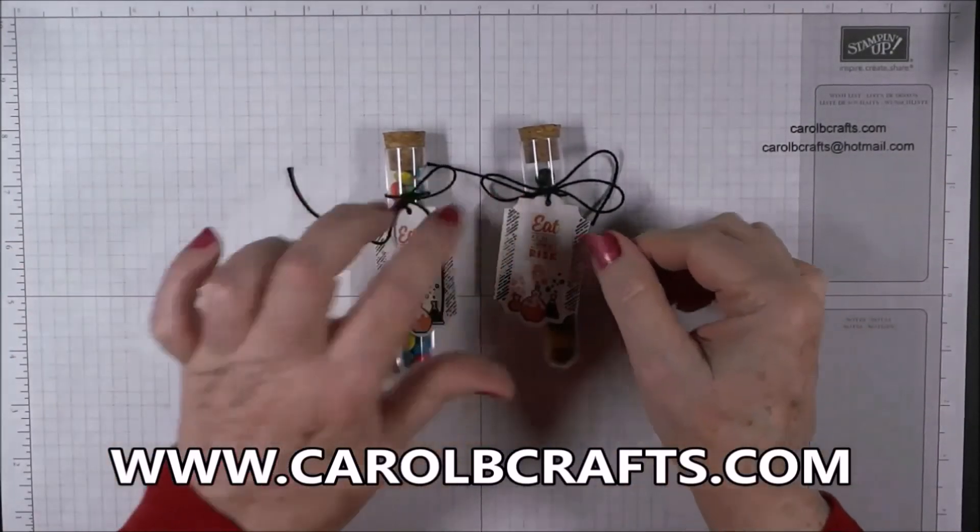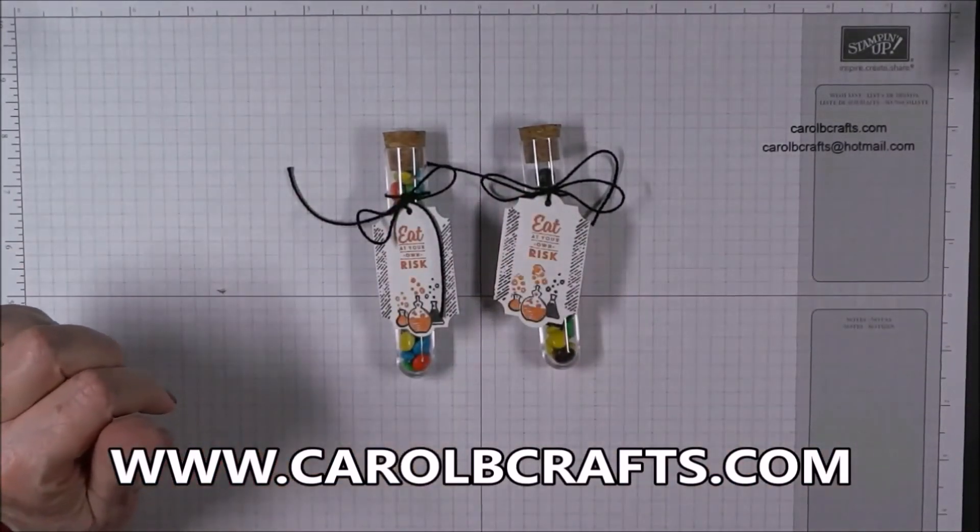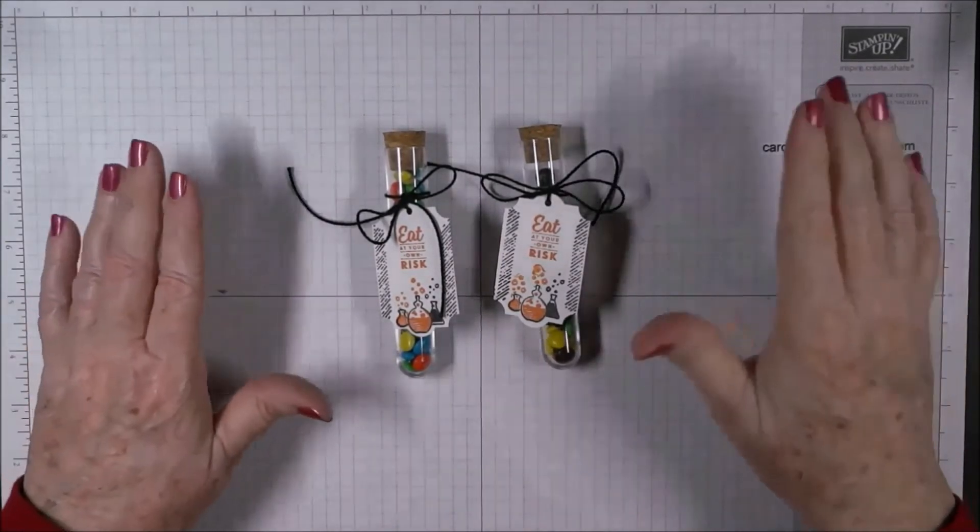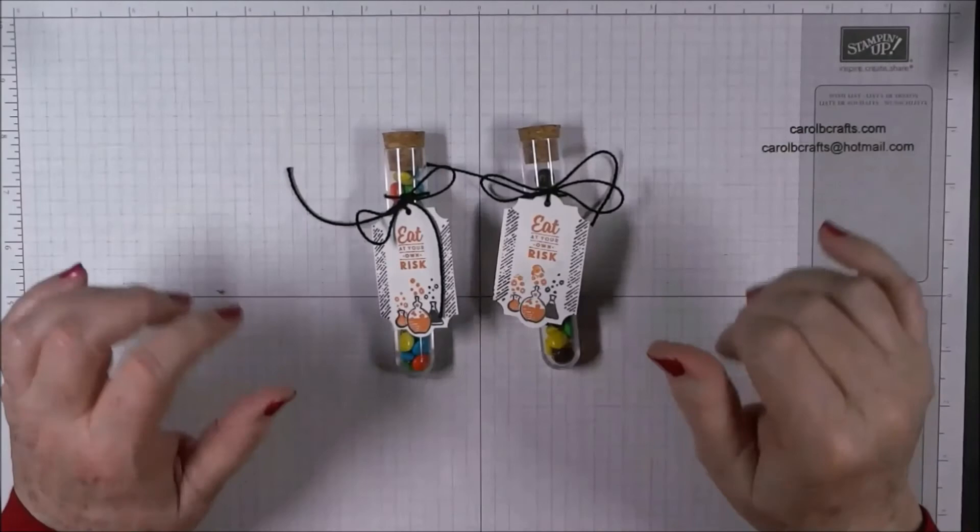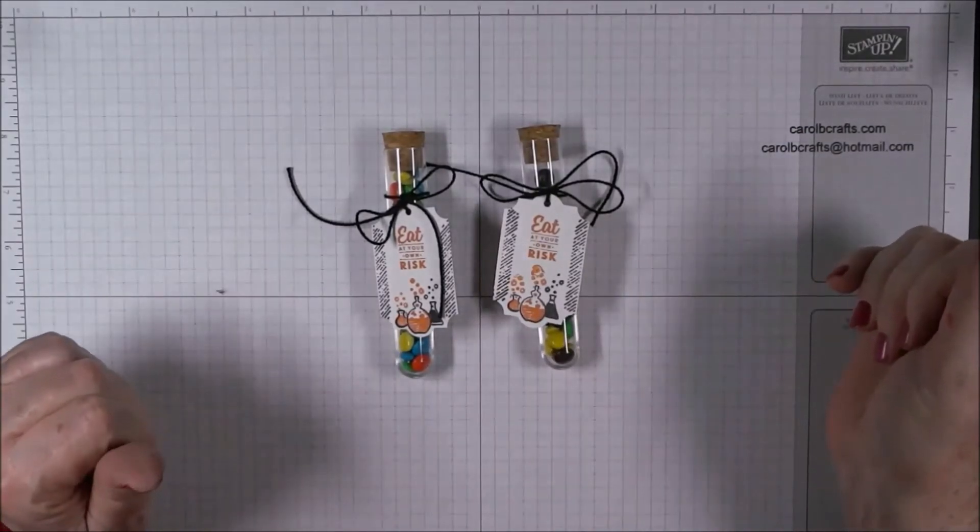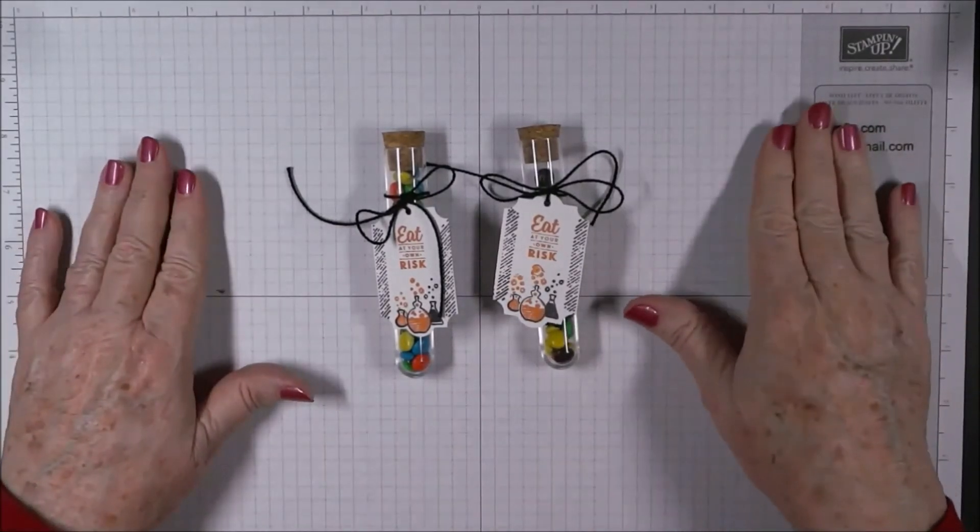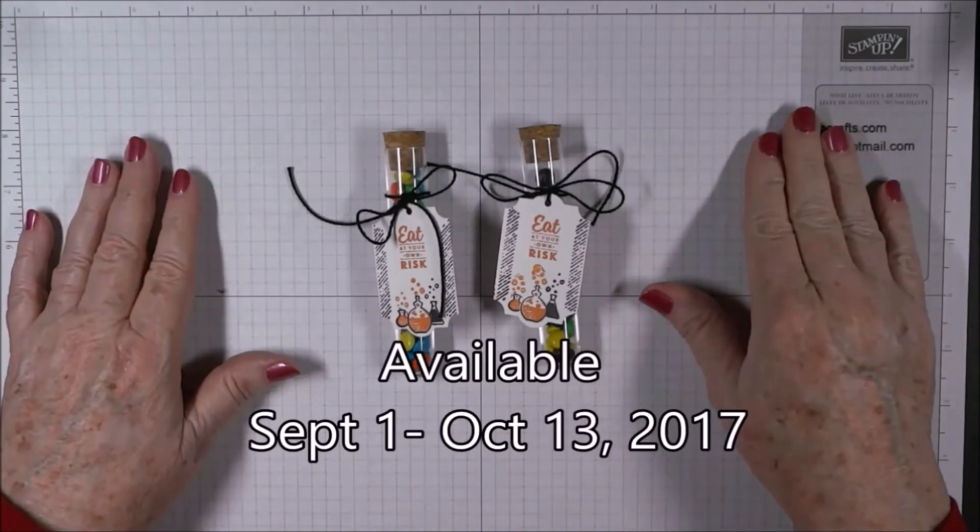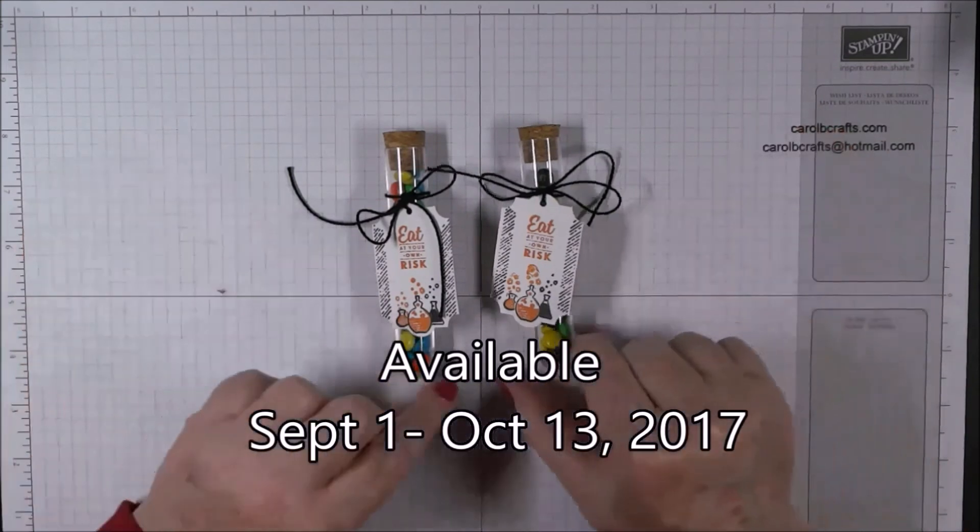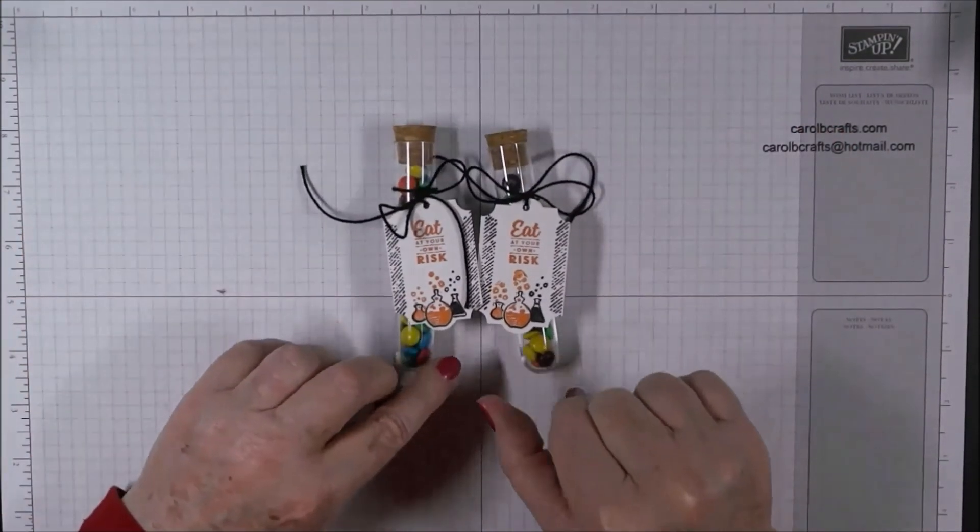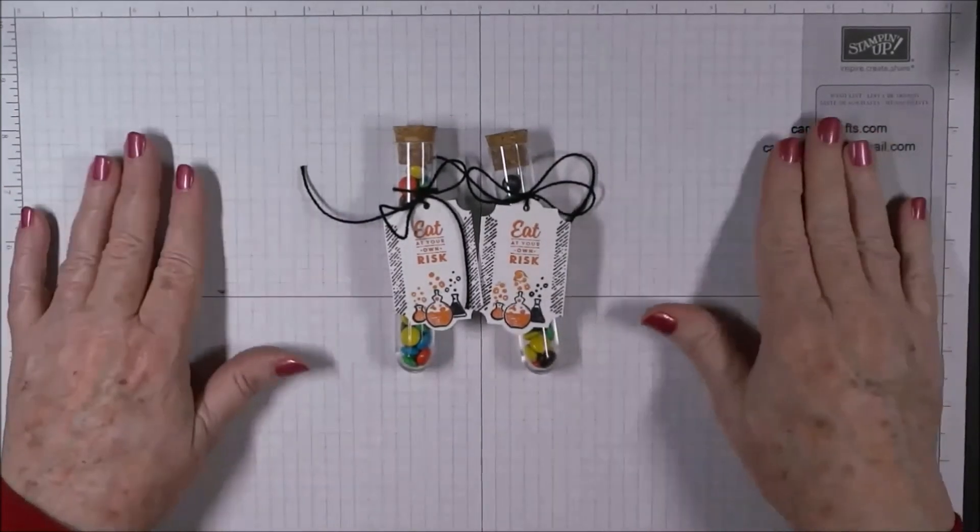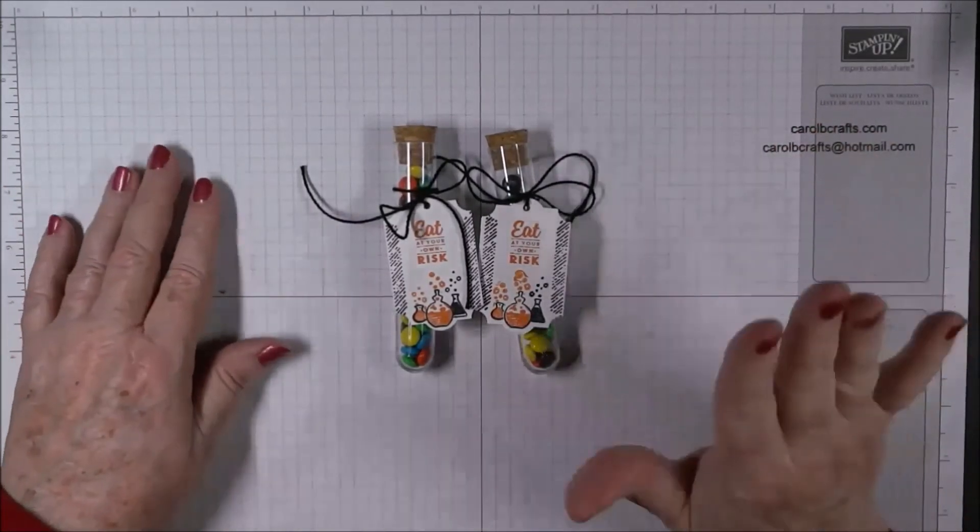Get that host code, make your $60 retail purchase using the host code, and I will send you all the materials free of charge, a gift from me for using me as your demonstrator. And this will be available September 1st through October 13th, that's a Friday. Thanks for watching and get ready for project number three in my Spooky Cat online class. Bye now.